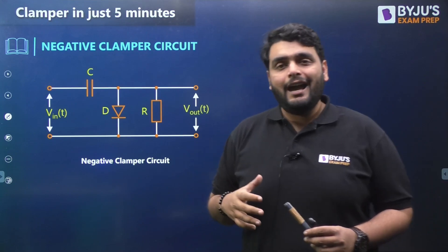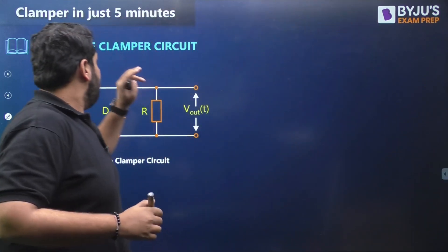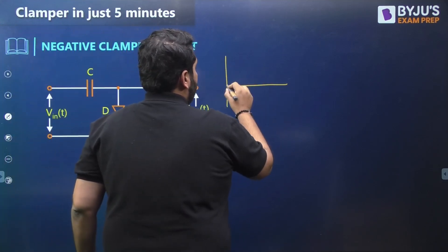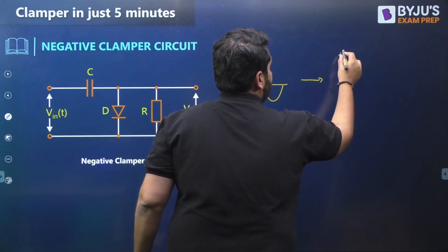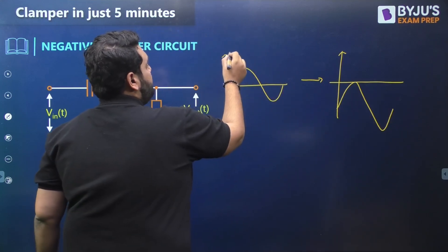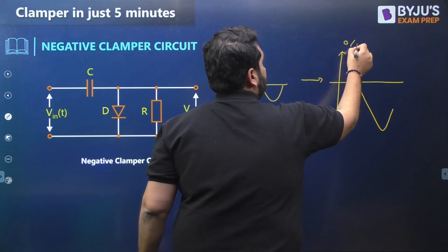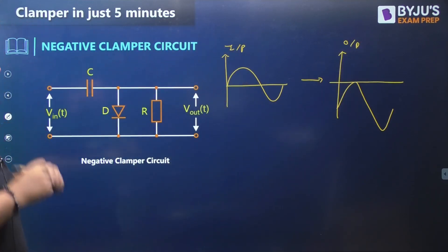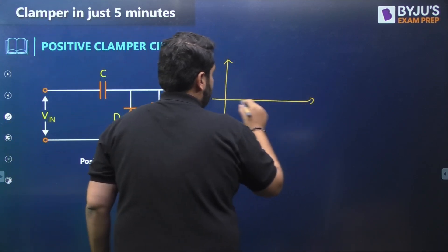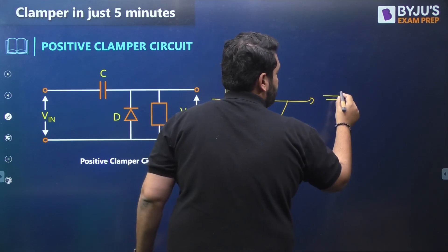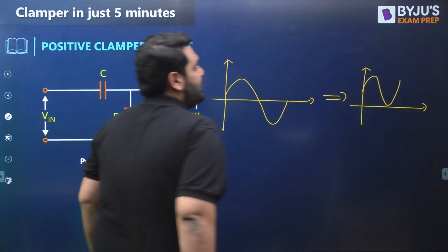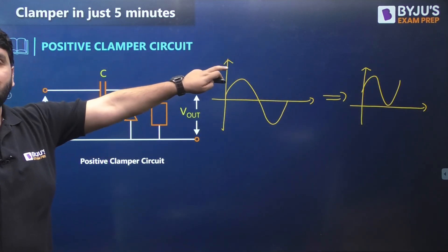We have different types of clamper circuits. A negative clamper circuit means that the input signal will shift downwards. A positive clamper means the signal is going to shift upwards — the input becomes the shifted output.